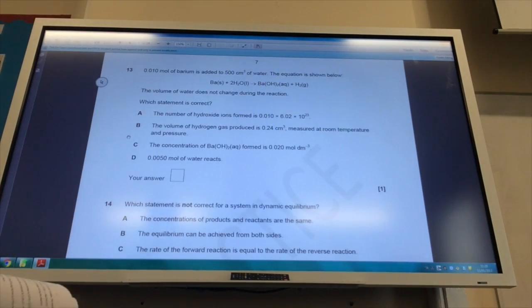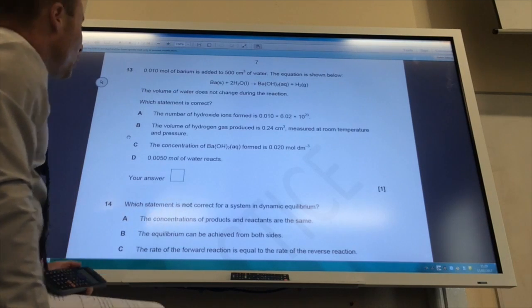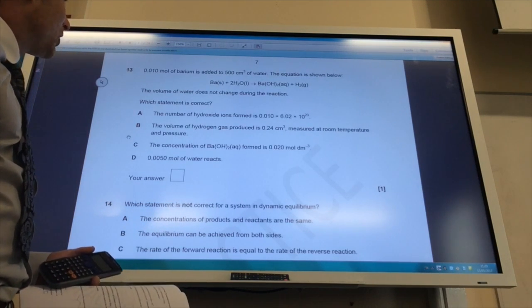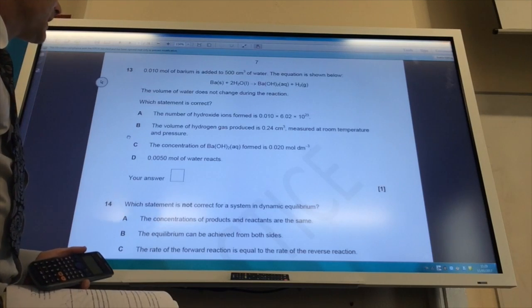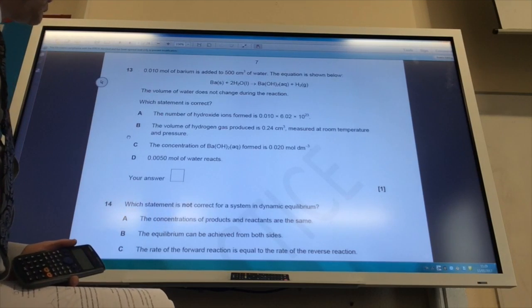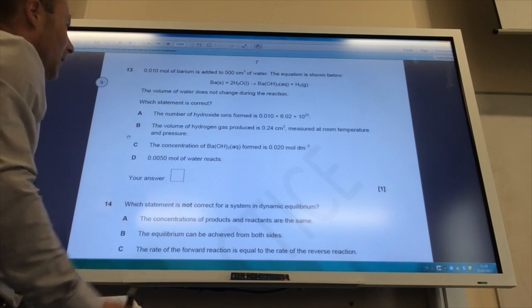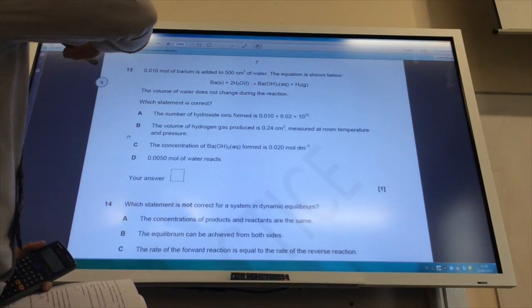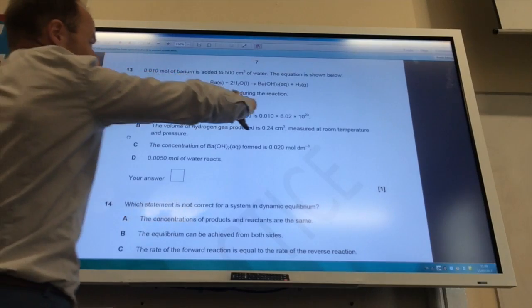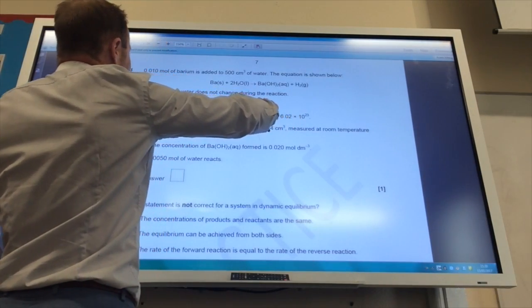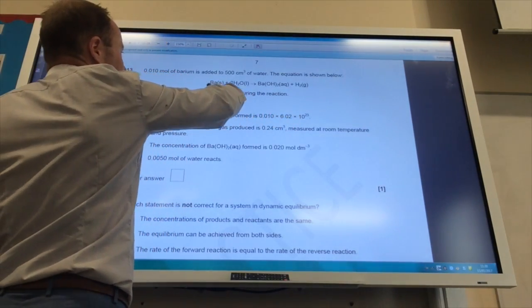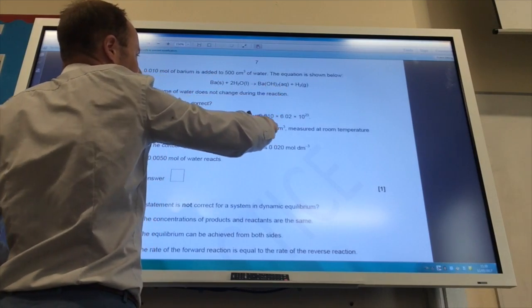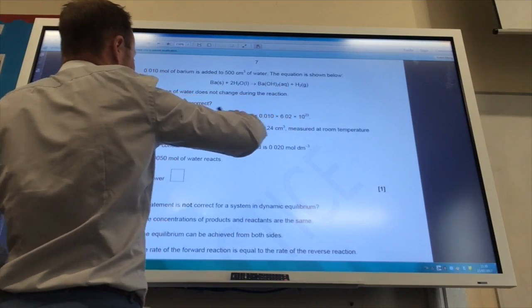Now on to moles for question 13. 0.01 mole of barium is added to 500 cm³ of water. Equation shown below. What statement is correct? The number of hydroxide ions formed is that number there. Well, that can't be right because for every one mole of barium, I make two moles of hydroxide ions, so this number would be times two.